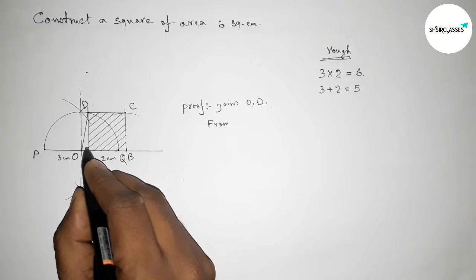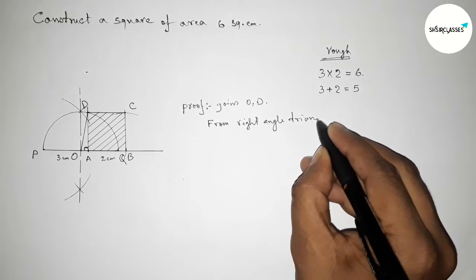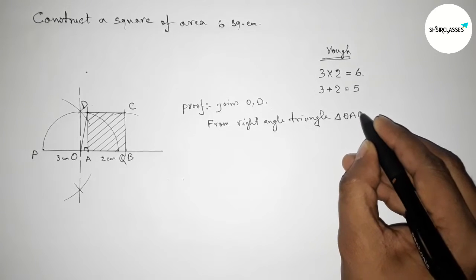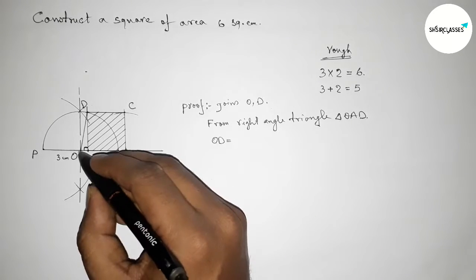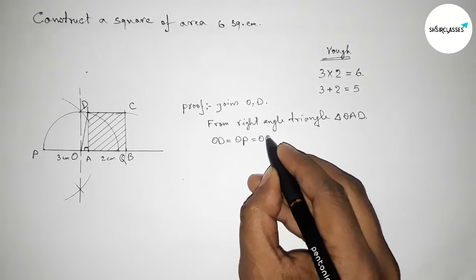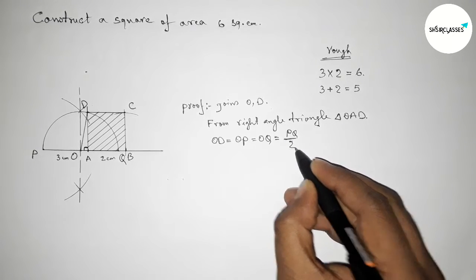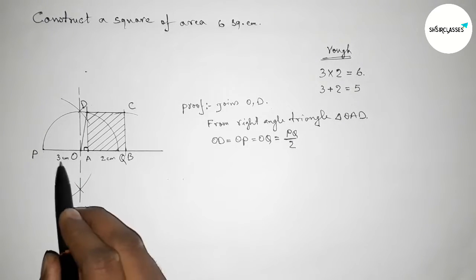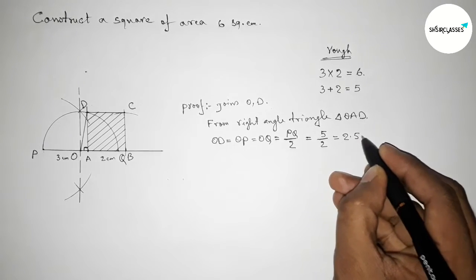From right angle triangle OAD — this angle at A is obviously 90 degrees. The hypotenuse here will be OD. Finding the value of OD: OD equals OQ equals OP, because these are radii of the semicircle. So OD equals PQ divided by 2, which is 5 divided by 2, giving 2.5 centimeters.